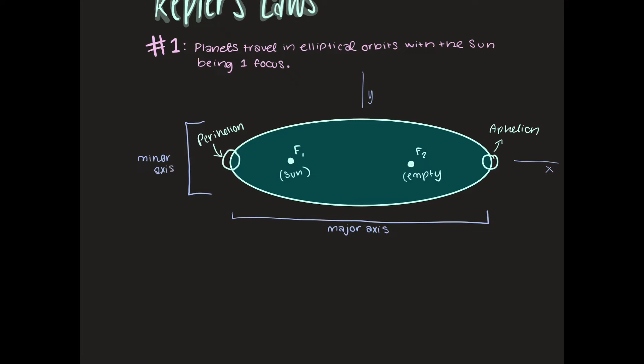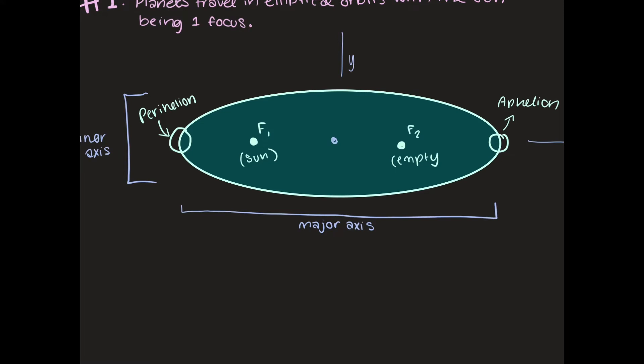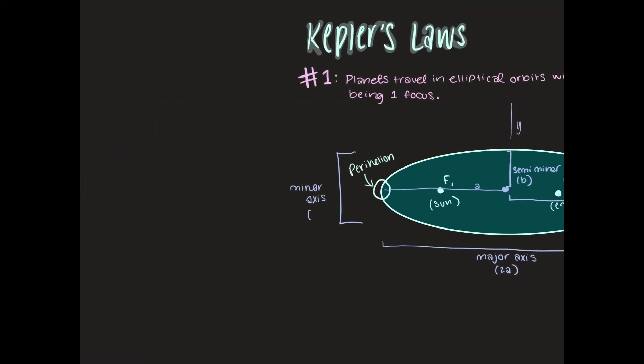We can divide the major and minor axes even further first by drawing our central point within our ellipse and then seeing that half of our major axis is going to be our semi-major and we can denote this with the variable a which means that everything on this side is also a and then we can do the same thing for our minor axis. Top to middle is our semi-minor and then that's denoted with b. Evidently this means that our major axis is equal to 2a and then our minor axis is equal to 2b.